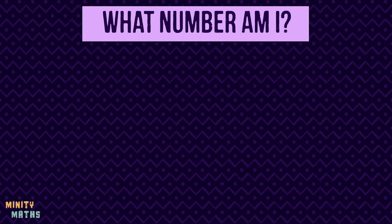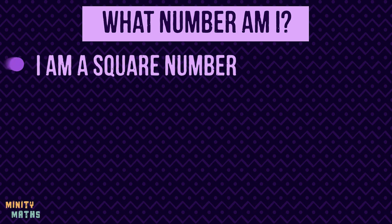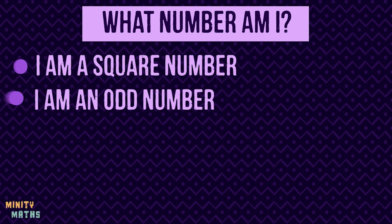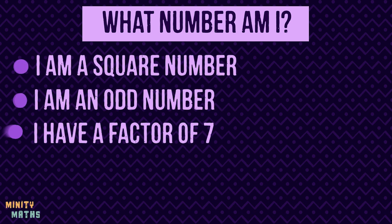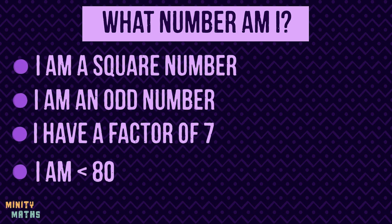Here is an example of a number riddle. We are given clues as to what the number is. Firstly, you should identify which one or two clues will narrow down the possible numbers the quickest, and start with those.